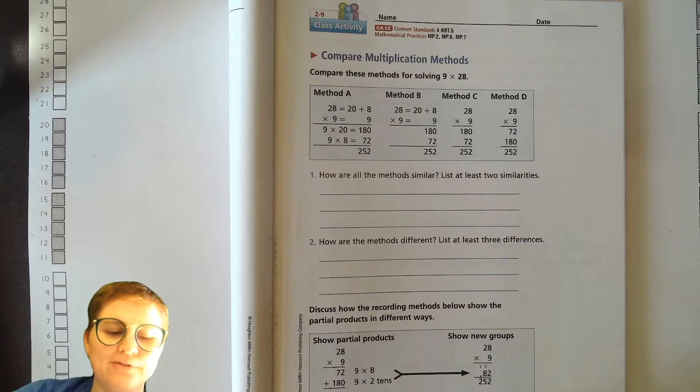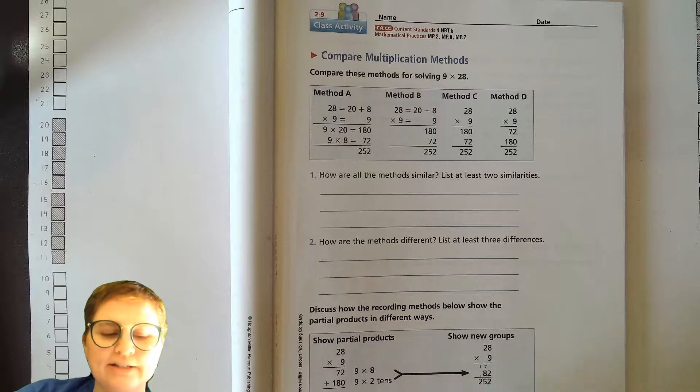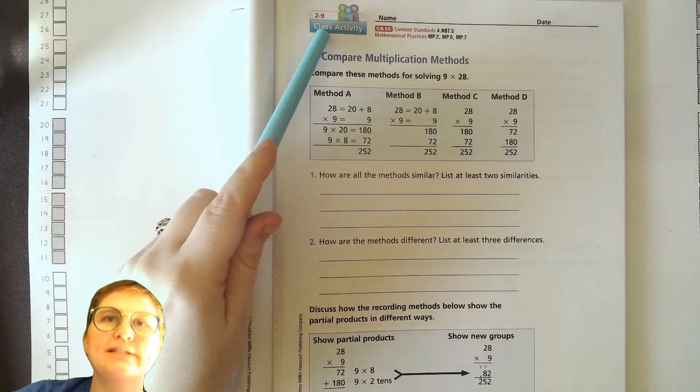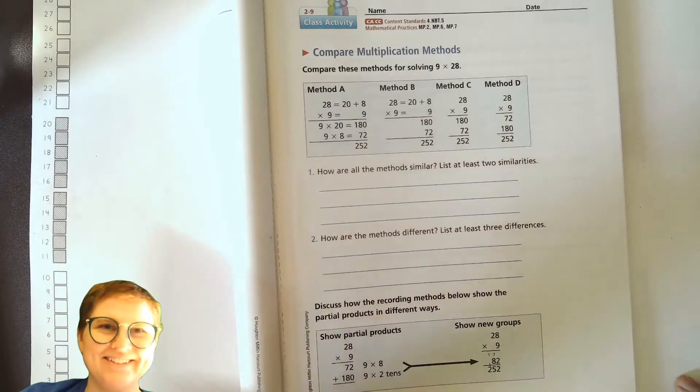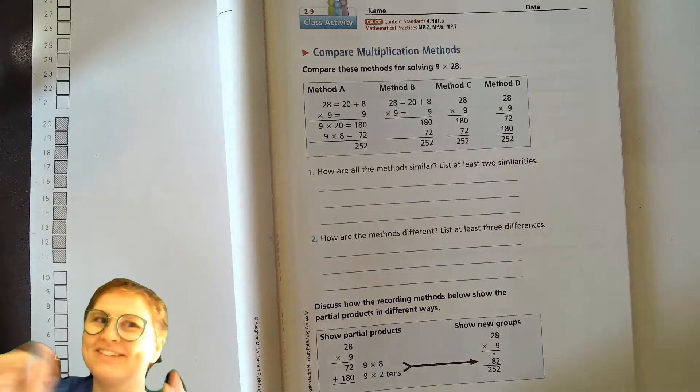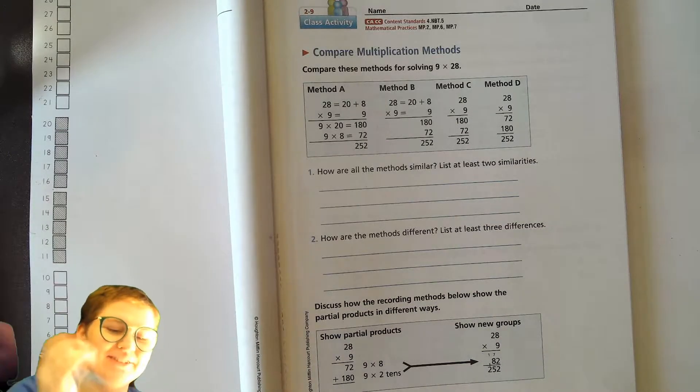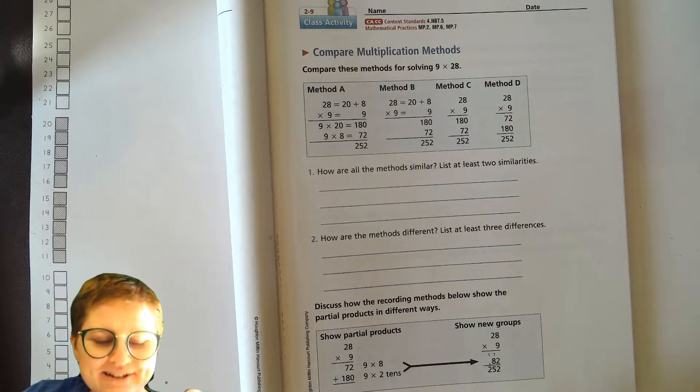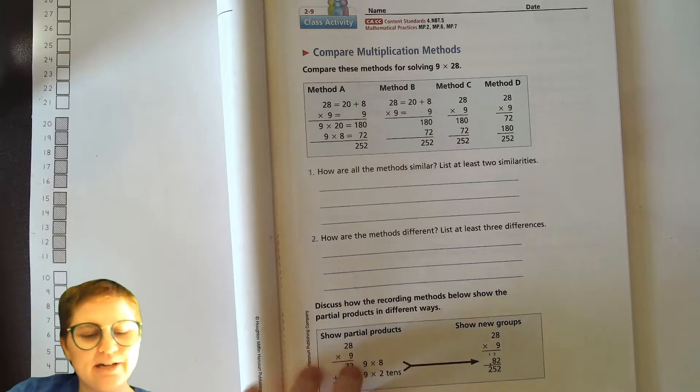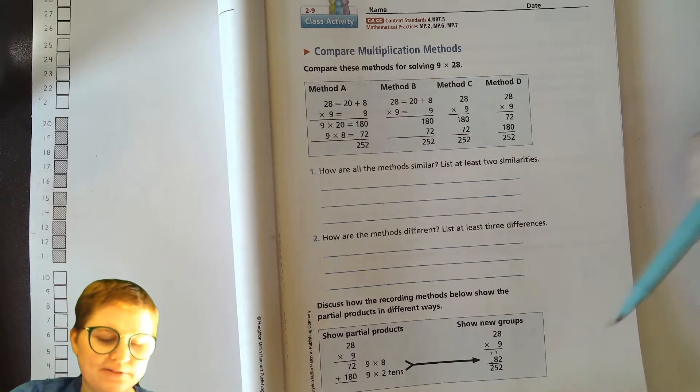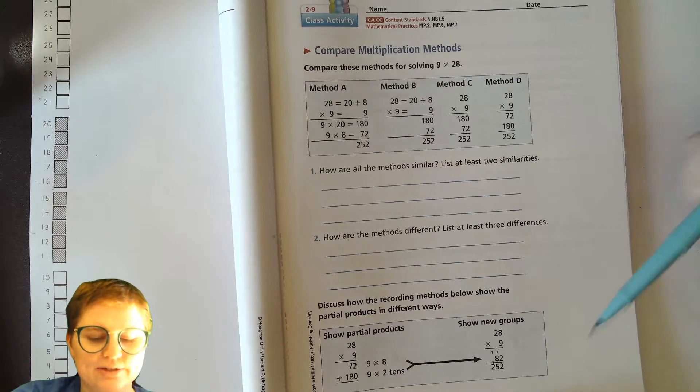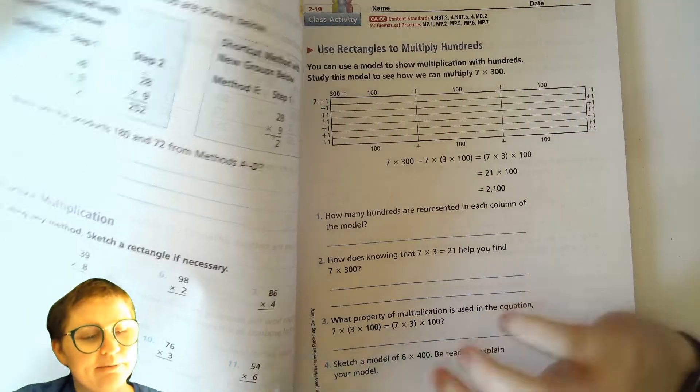Hello there my fourth grade friends, Miss Smith here. Today we are doing Unit 2, Lesson number 9, and it's on page 63, which is so funny—it's a multiple of nine, right? Nine times what is 63? Nine times seven, that's right. Okay, let's get down to business. In today's lesson we're talking about different multiplication methods, similarities and differences, and then we're gonna talk about this show new groups method and then we'll do a little bit of practicing.